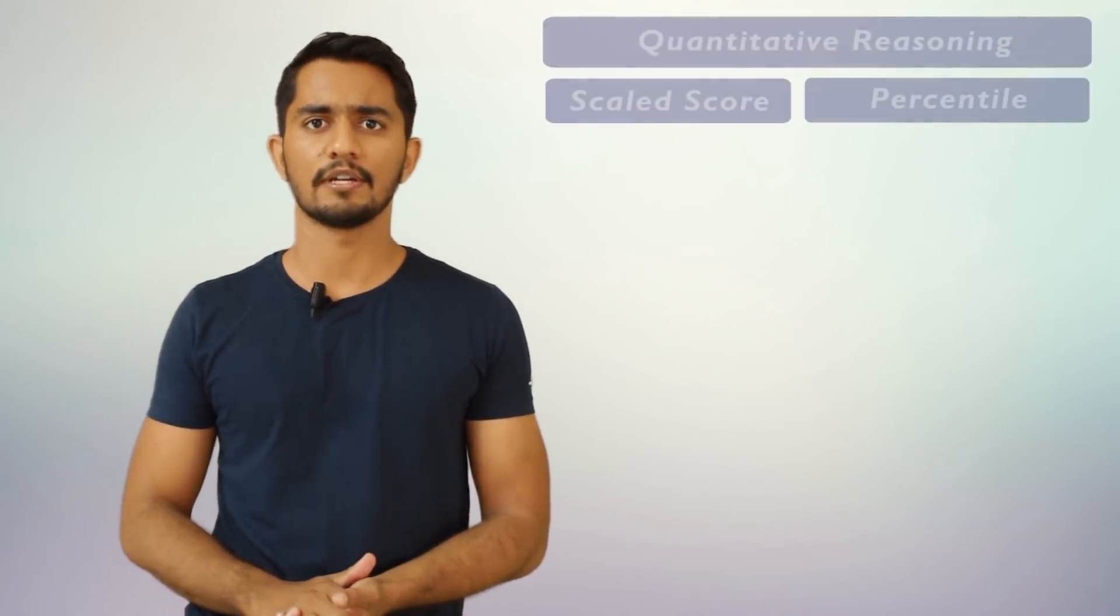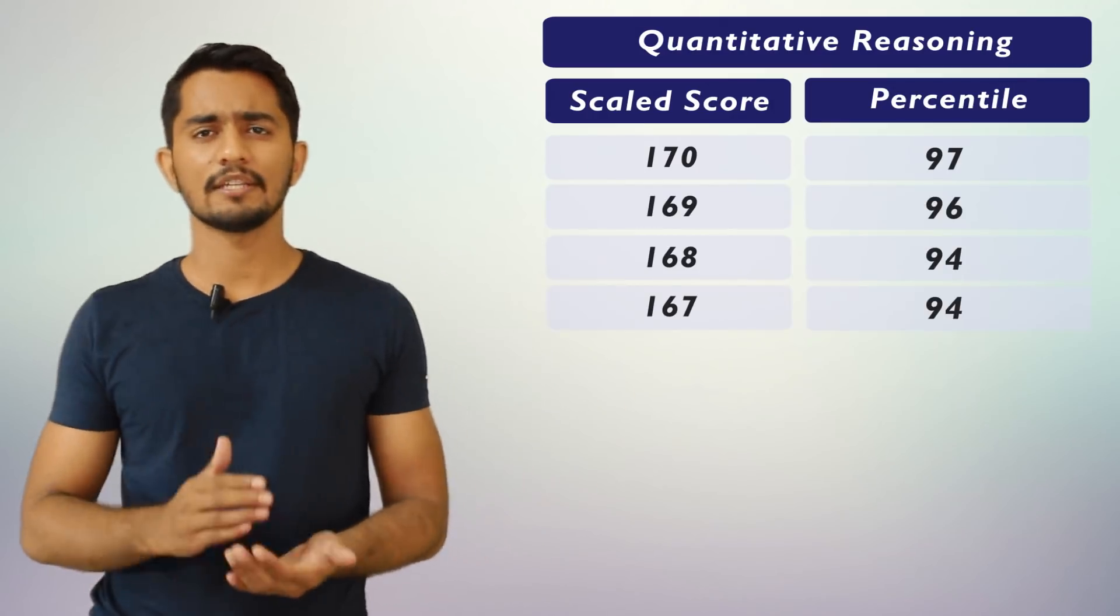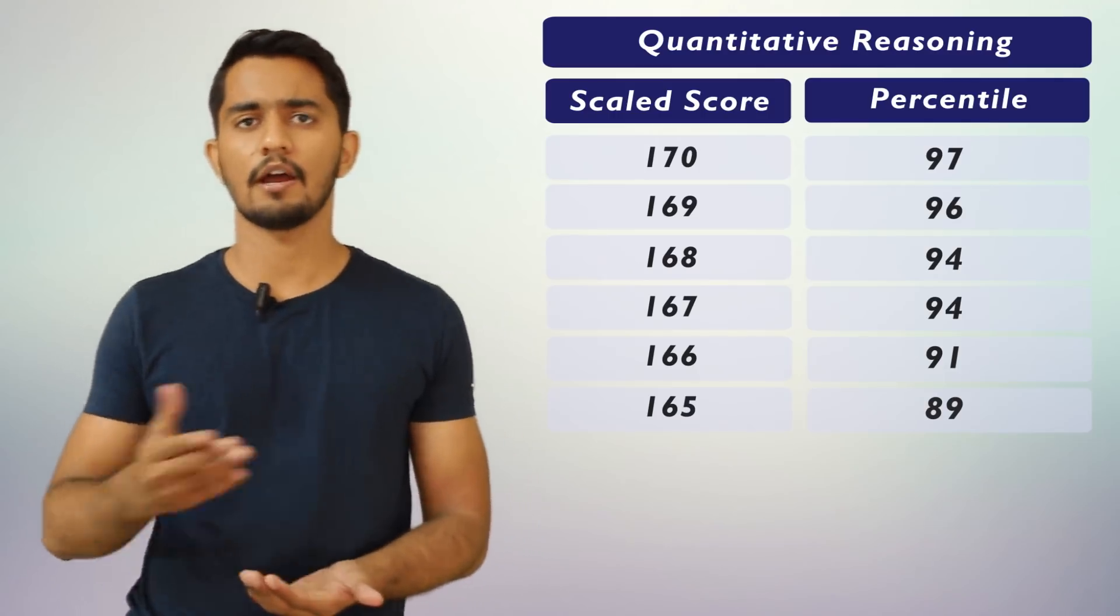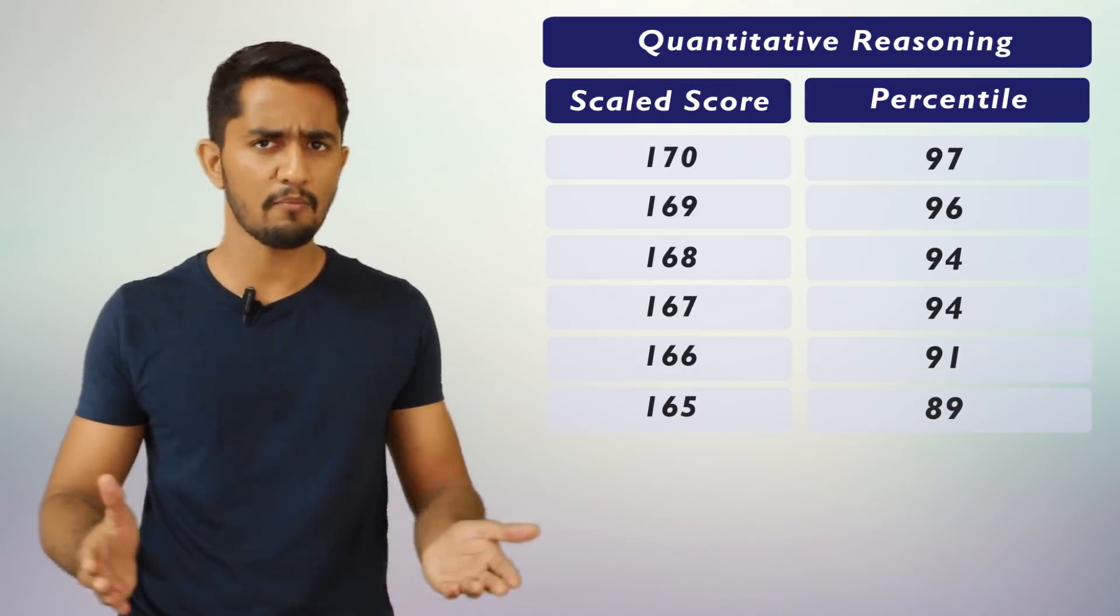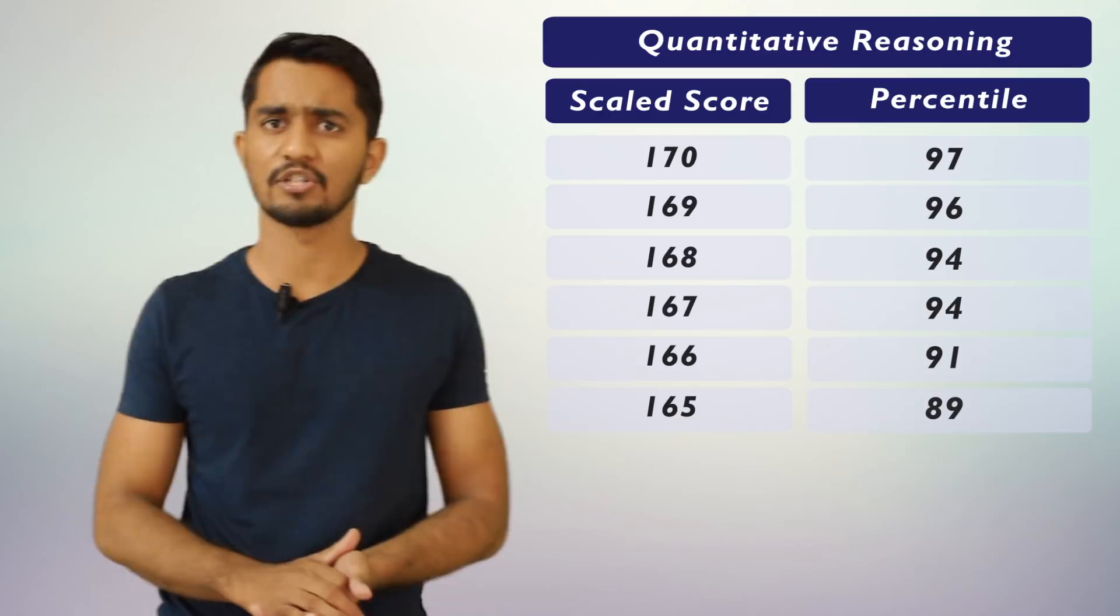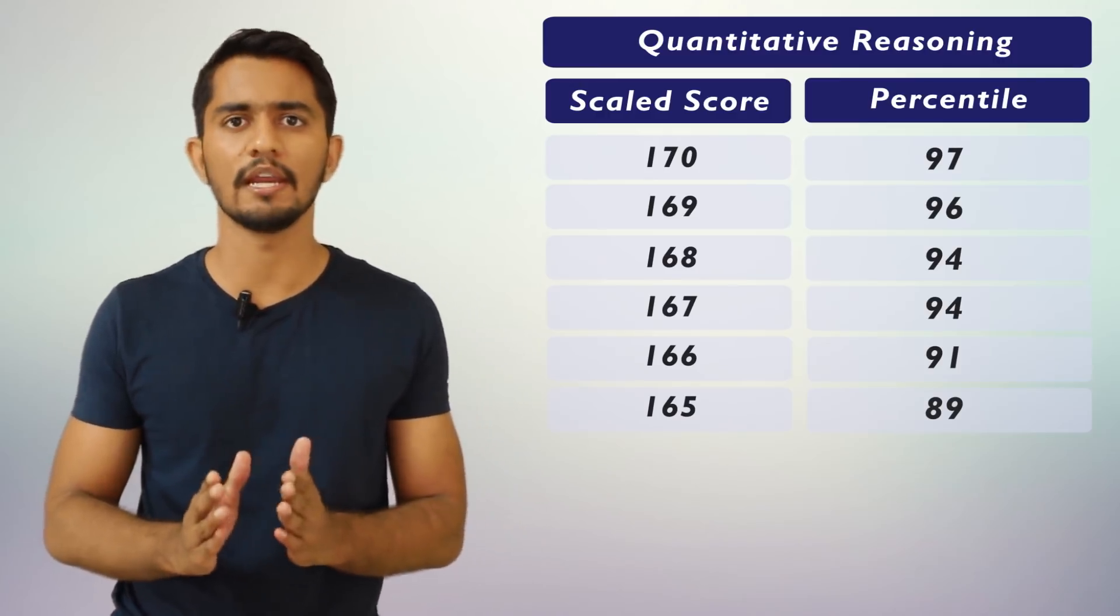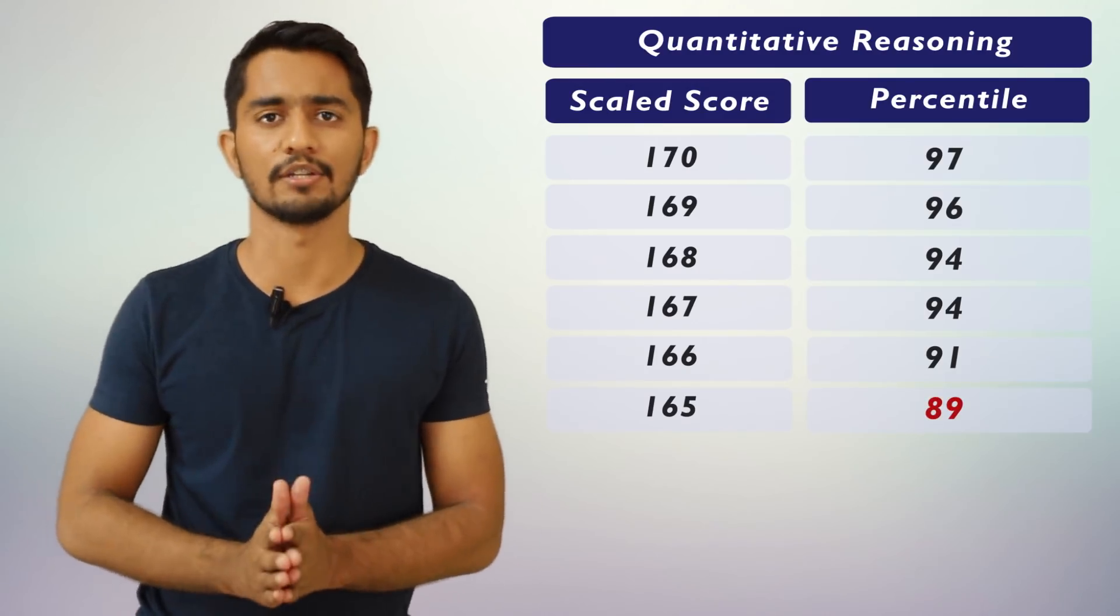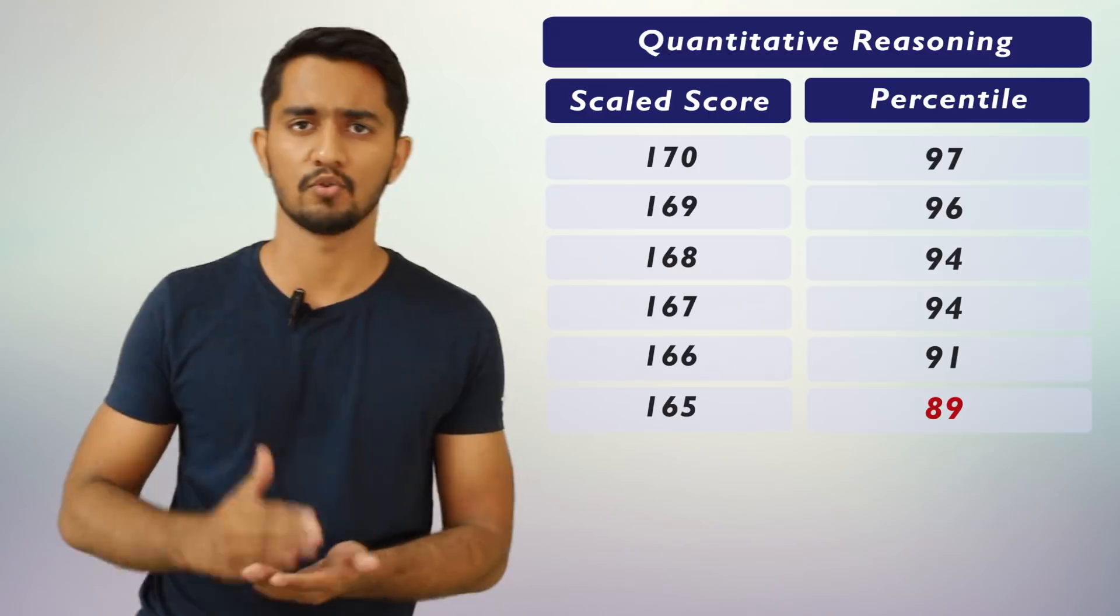So scoring a 170 will give you a 97 percentile. The chart is displayed on the left hand side. Scoring a 169 will drop the percentile to 96, which means 4 percent of people are ahead of you. If you score 165, not much less than 170, only 5 points less, maybe you got 5 questions wrong, your percentile drastically drops to 89 percentile and 1% is a huge margin.